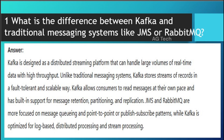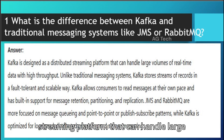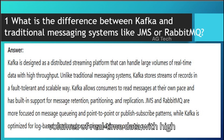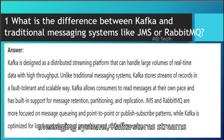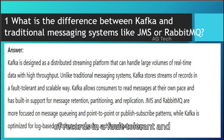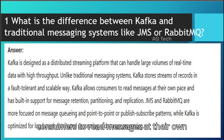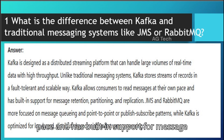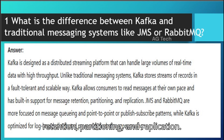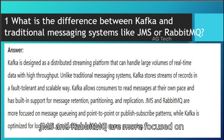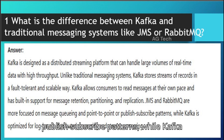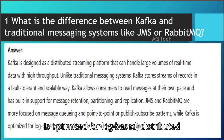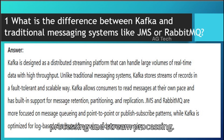Answer: Kafka is designed as a distributed streaming platform that can handle large volumes of real-time data with high throughput. Unlike traditional messaging systems, Kafka stores streams of records in a fault-tolerant and scalable way. Kafka allows consumers to read messages at their own pace and has built-in support for message retention, partitioning, and replication. JMS and RabbitMQ are more focused on message queuing and point-to-point or publish-subscribe patterns, while Kafka is optimized for log-based, distributed processing and stream processing.